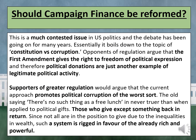This is a much contested issue in US politics. Essentially, it boils down to the topic of constitution versus corruption. Opponents of regulation argue that the First Amendment gives the right to freedom of political expression and therefore political donations are just another example of legitimate political activity. Supporters of greater regulation would argue that the current approach promotes political corruption of the worst sort. Those who give expect something back in return, and since not all are in a position to give due to inequalities in wealth, such a system is rigged in favour of the already rich and powerful.